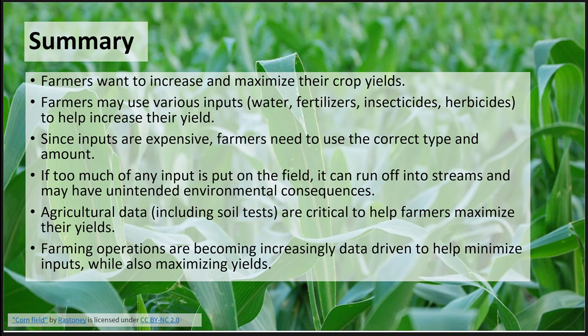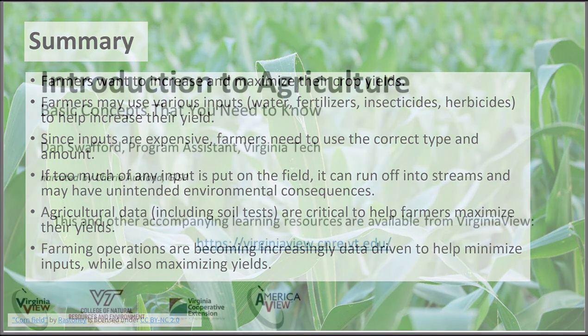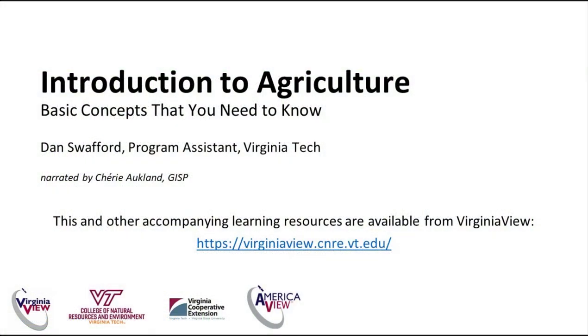A farmer's goal is to increase and maximize crop yields, and they will use various inputs such as fertilizer to help increase yields. A soil test is the farmer's opportunity to place the correct type and amount of input on their fields. And if they're using drones with precision agriculture techniques, they can target specific locations in a field for placing precise amounts of those inputs. It's important to place the correct amount and type of input precisely on a field to avoid unintended environmental impacts such as fertilizer runoff into a nearby stream. Farming operations are increasingly data-driven through the use of drones and other precision agricultural equipment to help save costs by minimizing inputs while also maximizing yields.